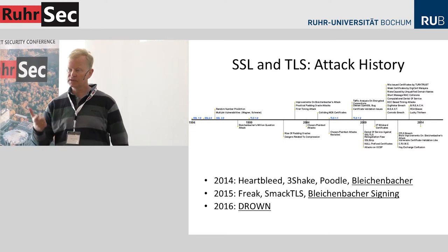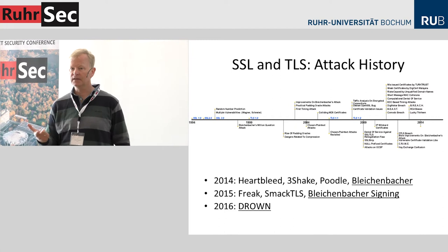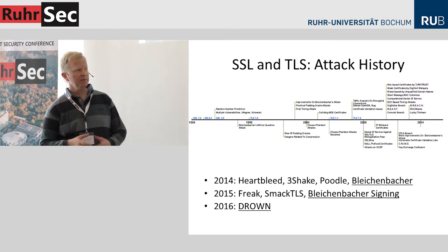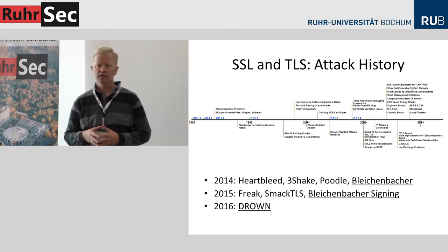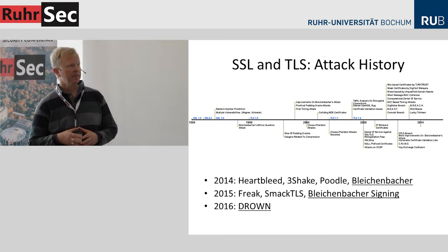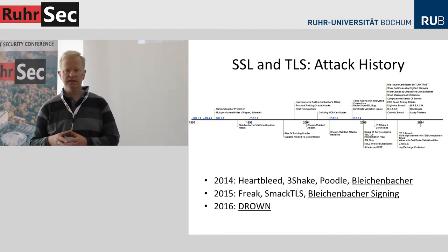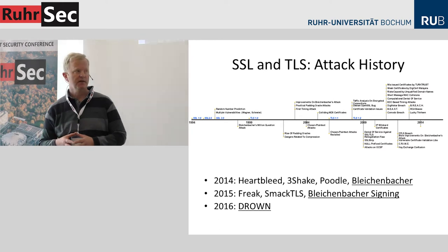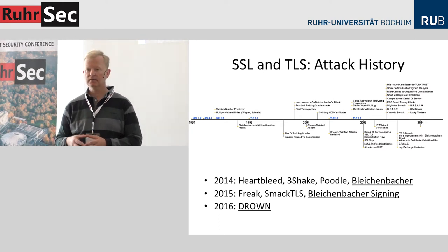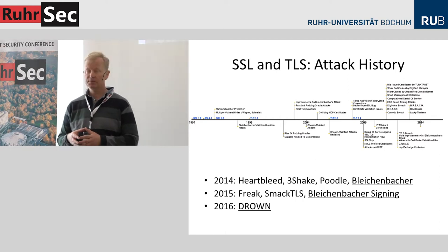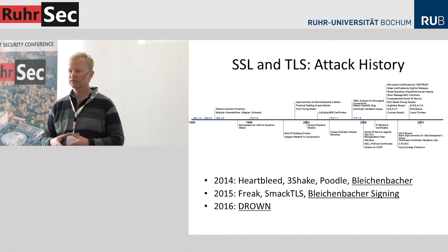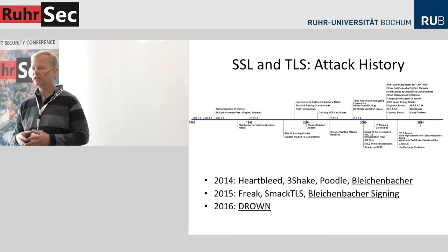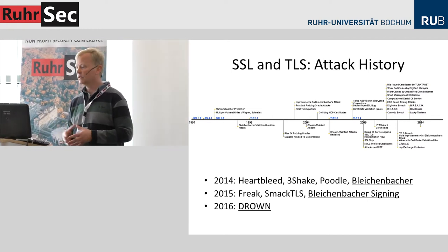We have reasons to deactivate SSL 2.0 and 3.0 completely because of Drown and Poodle. Then there was another Bleichenbacher attack from our chair, which I'll discuss later. In 2015 we had Freak, SMACK TLS, and problems about the TLS state machine surfaced. Then Bleichenbacher signing — the thing I want to talk about in the second part — and now we have Drown. It seems there are infinitely many possibilities for attacking TLS.